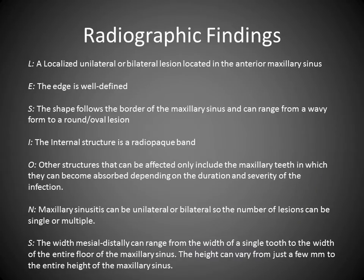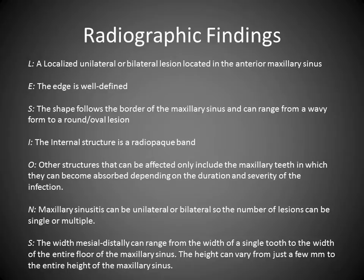For the radiographic findings, we use the LESIONS acronym. L stands for a localized unilateral or bilateral lesion located in the anterior maxillary sinus. E stands for the edge, which is well-defined. S is the shape — it follows the border of the maxillary sinus and can range from a wavy form to a round oval lesion. I is the internal structure — it is a radiopaque band.